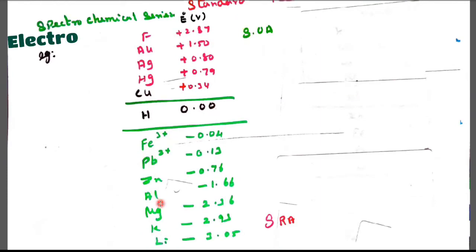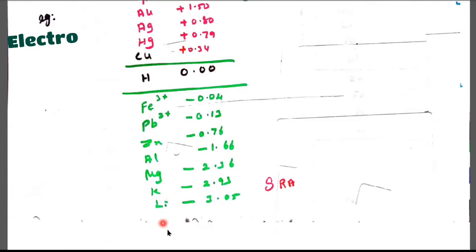Hydrogen has zero voltage, and iron 3+, lead 2+, zinc, aluminum, magnesium, potassium, lithium will have negative values.